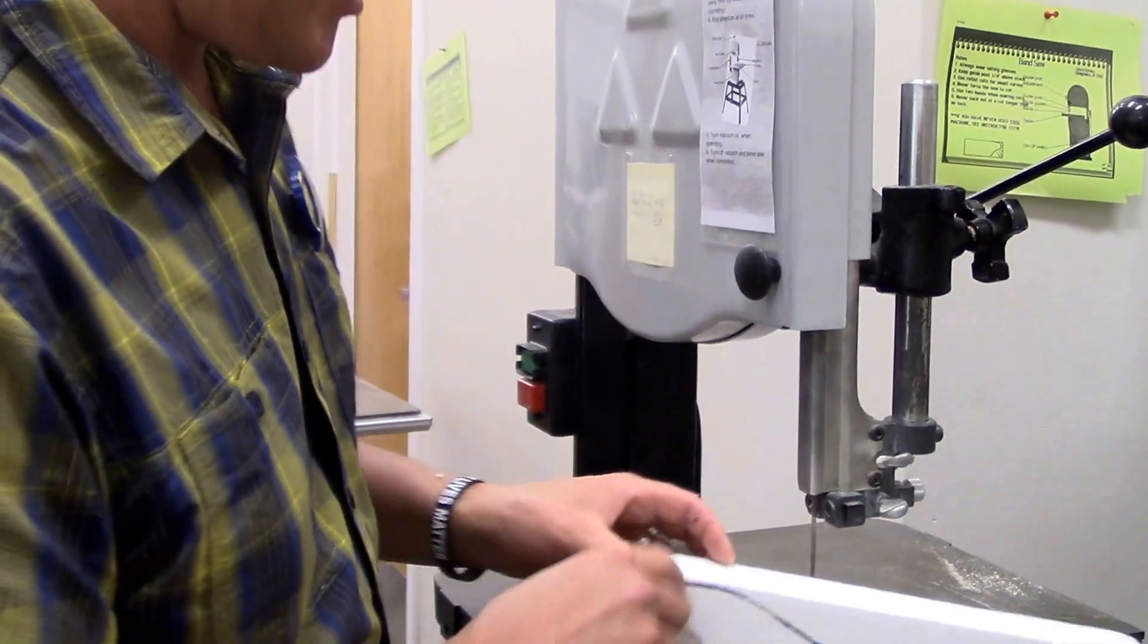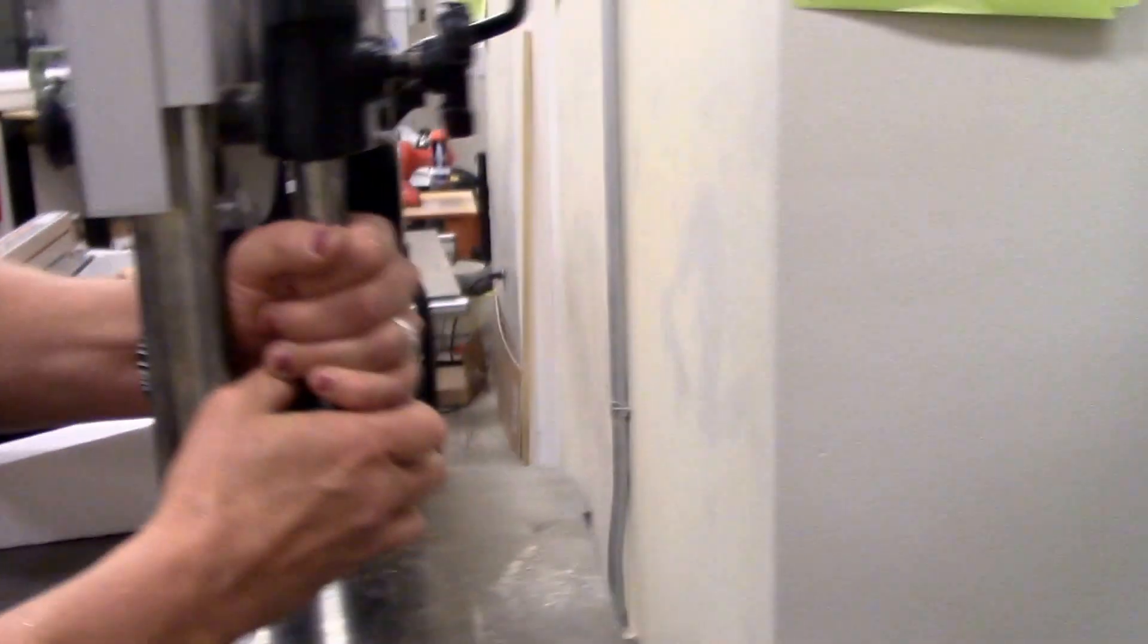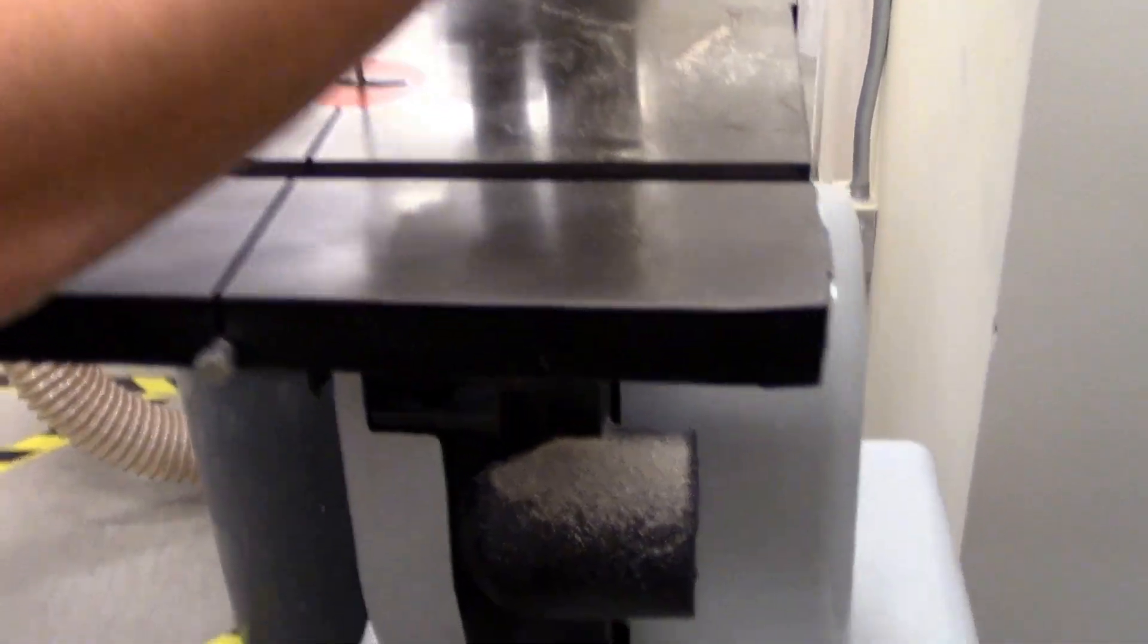So I'm going to make sure my saw is at the proper height. I'm going to do that by first placing my stock underneath. It should be a quarter inch. If it's not, we're going to loosen and then raise or adjust this as is necessary. That's good, so I'm going to tighten that down.